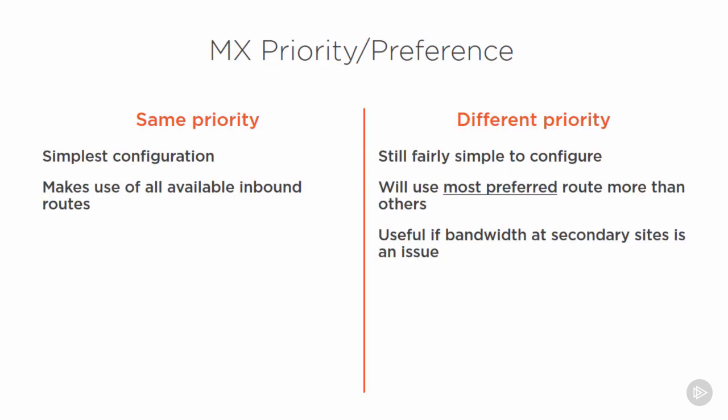You can either use all MX records equally by configuring them all to the same priority or preference. By equally I don't mean that the inbound email traffic will be perfectly load balanced between them all - there'll be some randomness to how other servers pick which MX to use when there are multiple MXs with the same priority. But this is the simplest configuration, and because all available inbound routes get used on an ongoing basis, you can generally be confident that if a problem creeps in with one of them, you'll notice it quickly, instead of one day cutting over to a secondary MX and suddenly discovering it's not working.